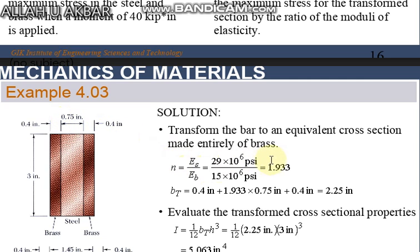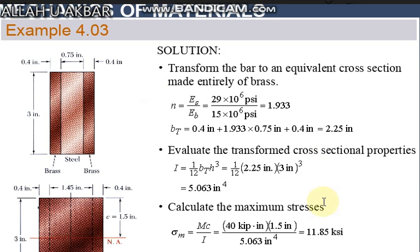And the value which we obtained, multiply by 0.75 plus 0.4, we have 2.25 inch. Now we will calculate the values for cross-sectional properties.